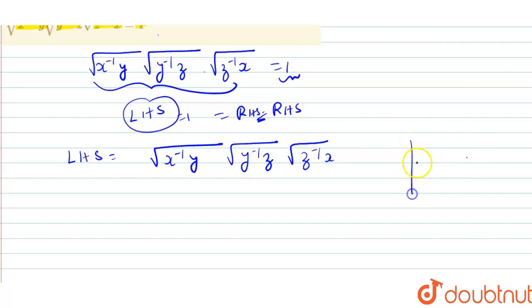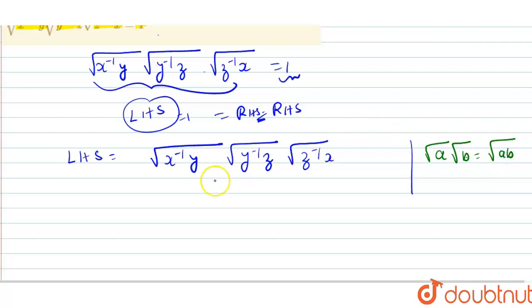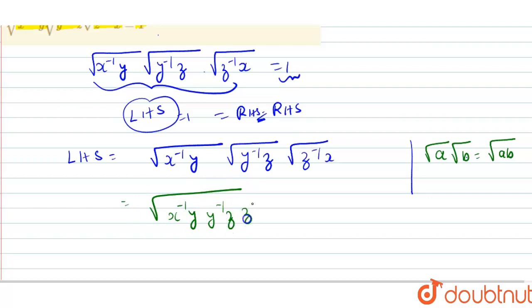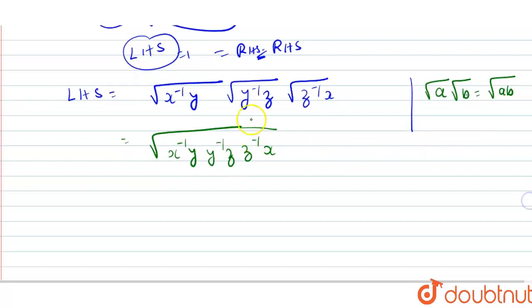Using the property that √a · √b = √(ab), this can be written as under root of x raised to minus 1 into y, into y raised to minus 1 into z, into z raised to minus 1 into x — all under a single square root.